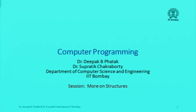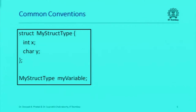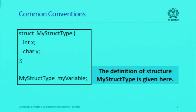Let's continue our discussion on structures. The first few slides are trying to clarify that when I mention a structure during a discussion, what exactly do I mean depends on the context. For example, if I say the definition of structure, my struct type is given here, I'm referring to a specific structure.